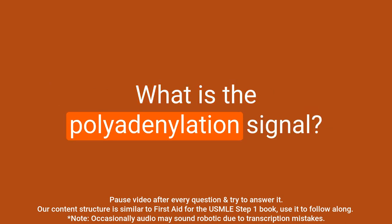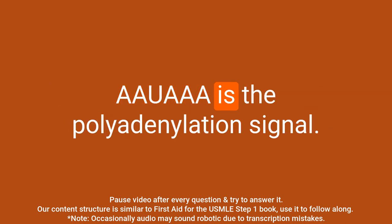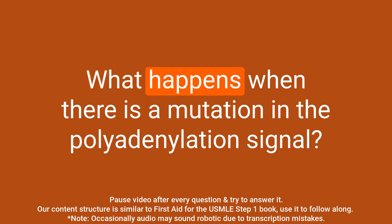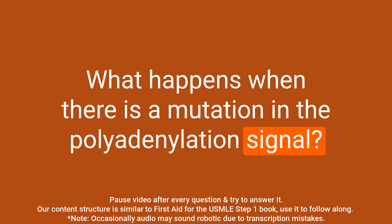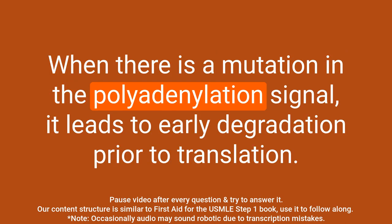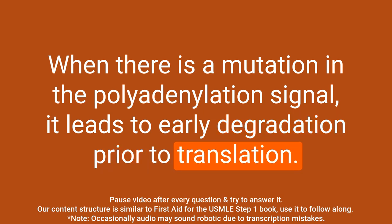Question: What is the polyadenylation signal? Answer: AAUAAA is the polyadenylation signal. Question: What happens when there is a mutation in the polyadenylation signal? Answer: When there is a mutation in the polyadenylation signal, it leads to early degradation prior to translation.